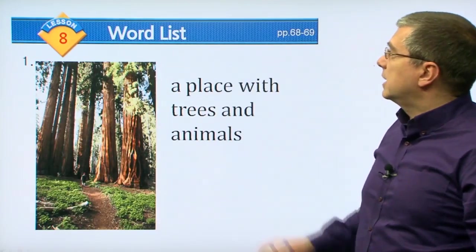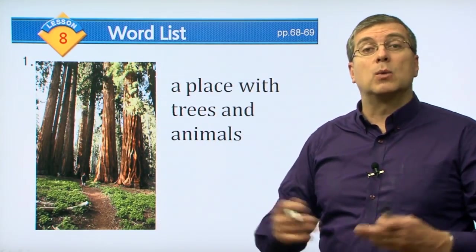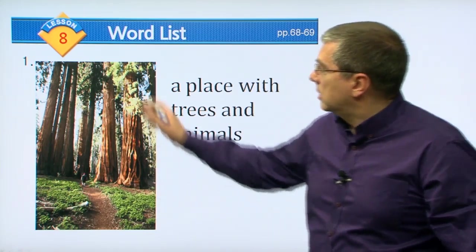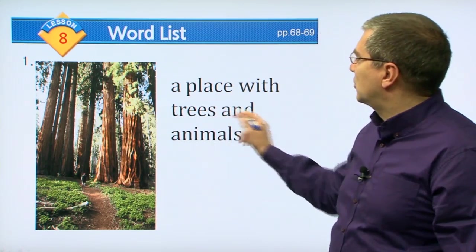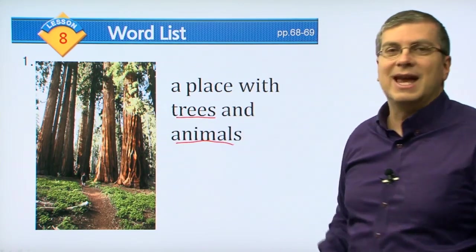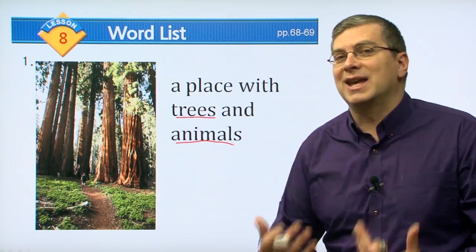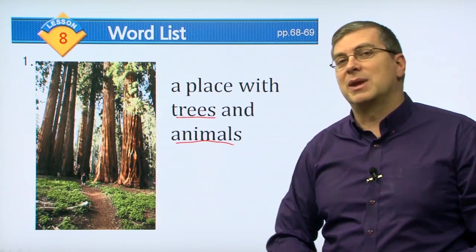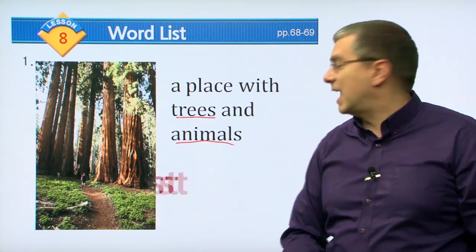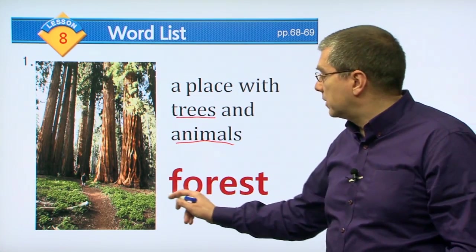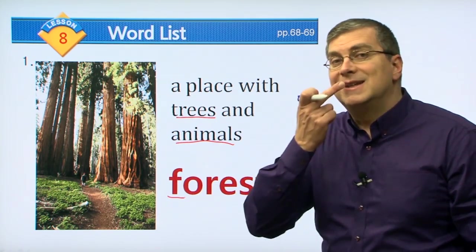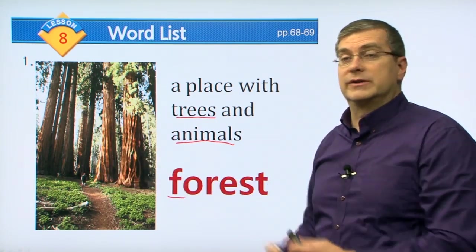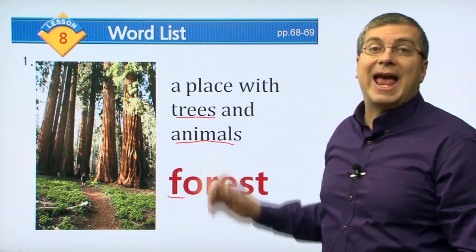Let's take a close look at our word list for this unit. What kind of vocabulary will we learn? First of all, we have a picture of a place with trees and animals. I was just talking about this place. Do you remember the name? It starts with an F. Of course, it is a forest. When you say forest, remember with the F, your teeth are on your bottom lip. Forest. This is a forest - a place with trees and animals.